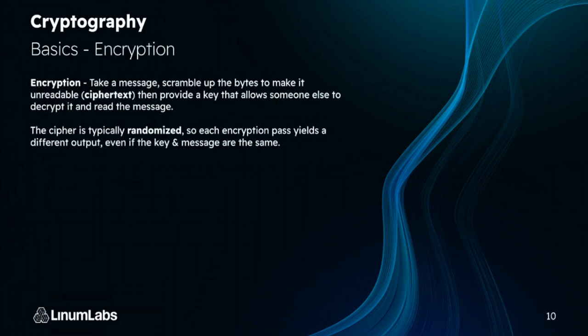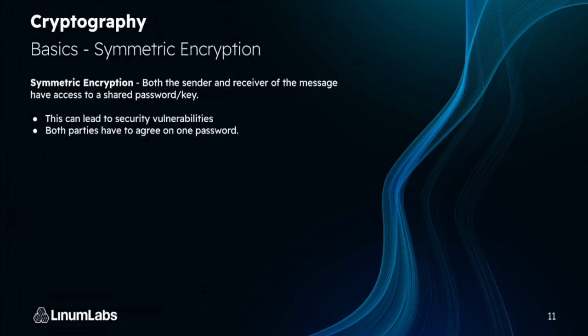Encryption takes a message and scrambles it with bytes to make it unreadable as ciphertext — substitution ciphertext is more similar to encryption. We provide a key that allows someone else to decrypt it and read the message. The cipher is usually randomized, so each encryption pass yields a different output even if the key and message are the same. You therefore can't build lookup tables for passwords. This is much more secure than just hashing.